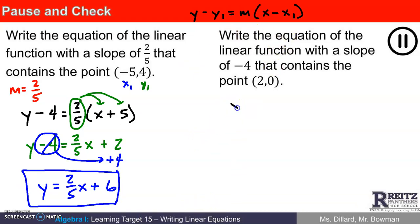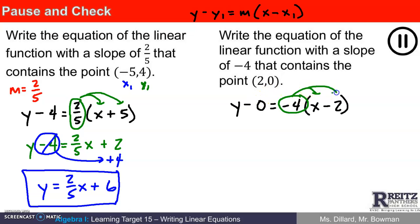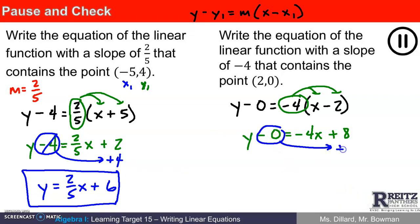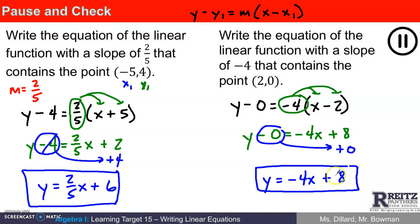For the other example: y minus 0 equals negative 4 times the quantity x minus 2. Distributing the negative 4: negative 4 times x is negative 4x, and negative 4 times negative 2 is positive 8. So we have y minus 0 equals negative 4x plus 8. Since y minus 0 is just y, the answer is y equals negative 4x plus 8. It's time to practice this on your own now — thanks for watching.